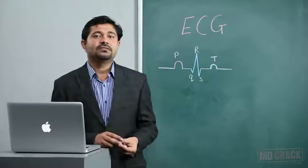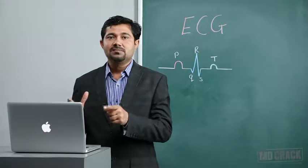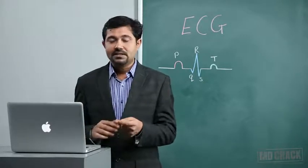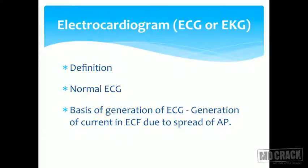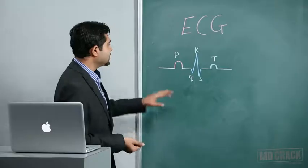Hello students, welcome to the new session of cardiovascular physiology - ECG. In this lecture we will see the basis of generation of ECG, how the normal ECG is being generated, what is the ECG and what causes its generation. ECG is a record of electrical activity of the heart - the spread of action potential generates electrical potentials in our body, and this can be recorded with suitable electrodes from the surface of the body.